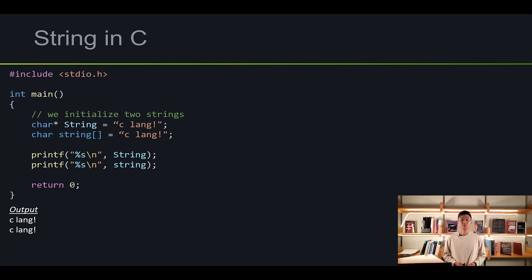Now that you have some experience with arrays and multi-dimensional arrays, we are ready to tackle the next topic about strings. On the screen, I made two variables — one is a character pointer string, and the other one is an array called string. I printed them out and they both printed out the same result. These are some of the ways how you can make a string.